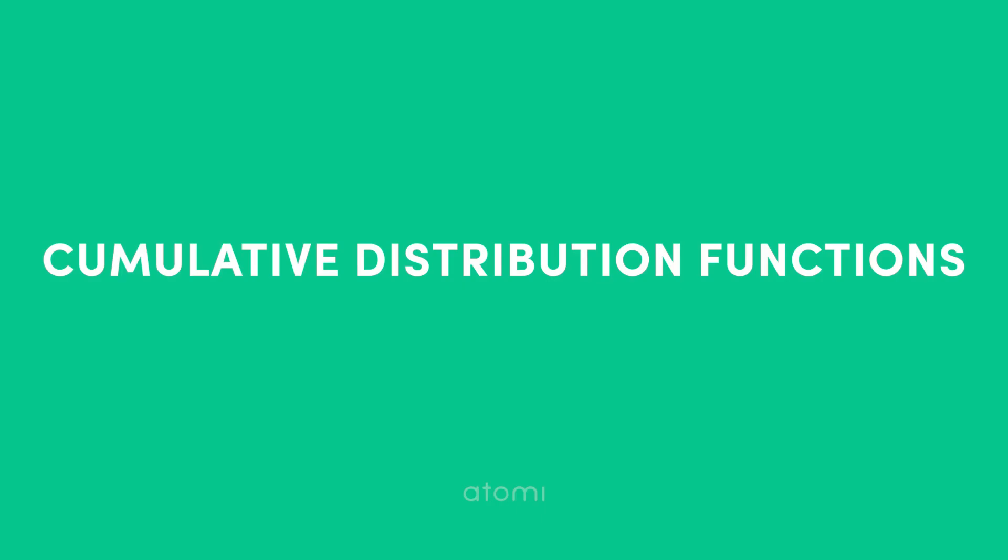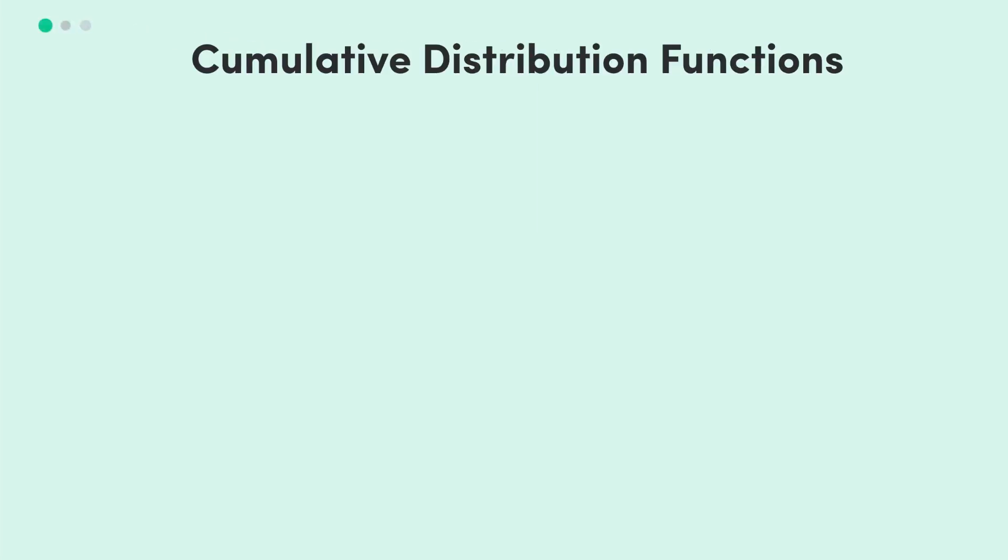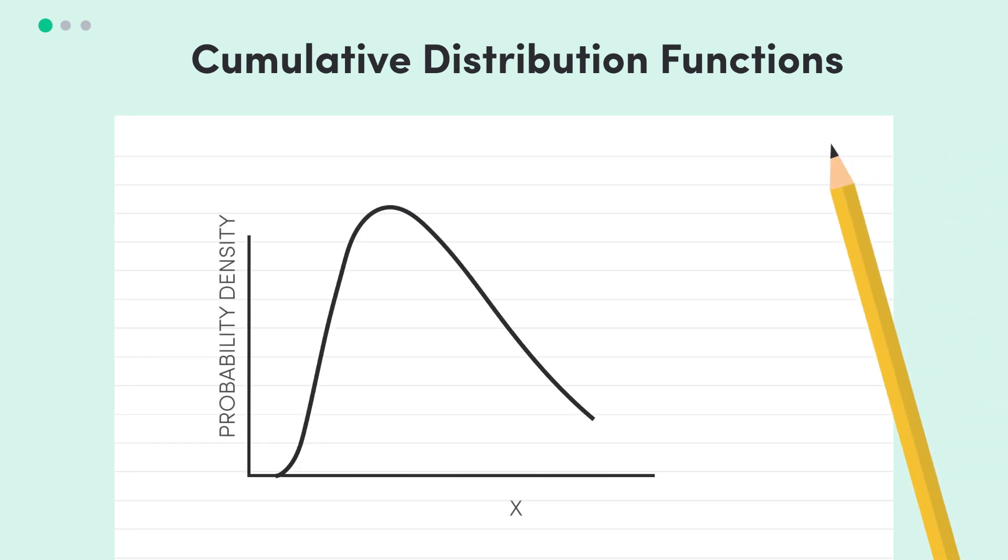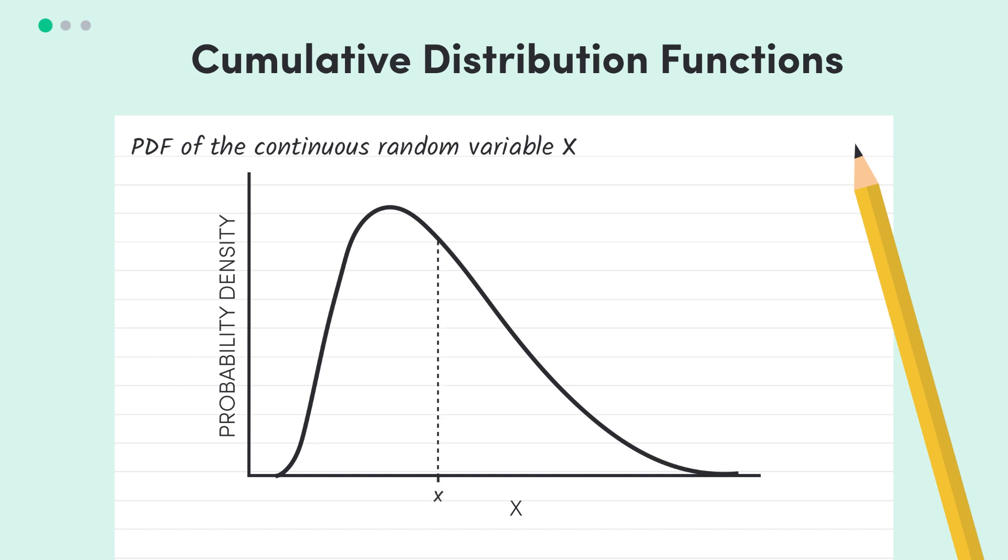Okay, so let's say we have some continuous random variable x and it has this PDF. We know we can look at the probability that x is less than a particular value. Let's call it little x. That's just this area to the left of that point. This is sometimes called the cumulative probability that big X is less than little x.